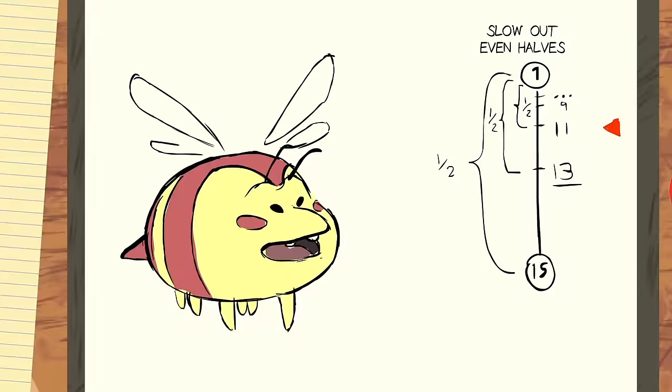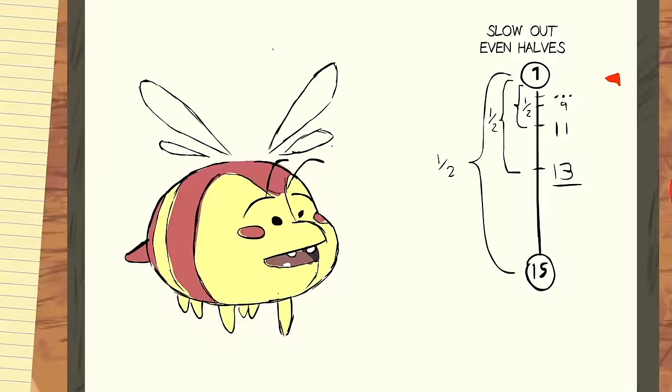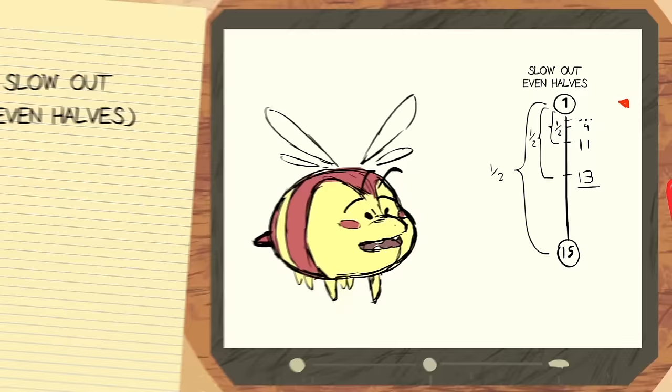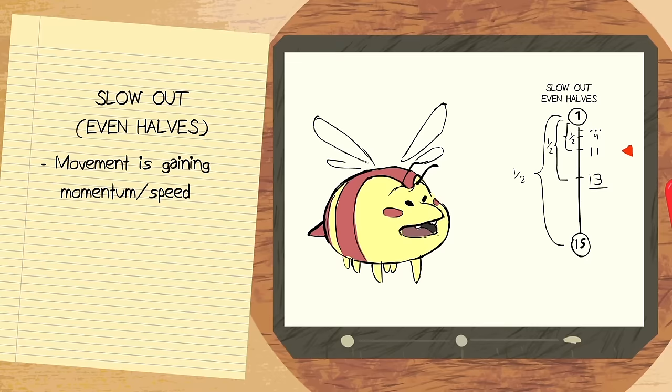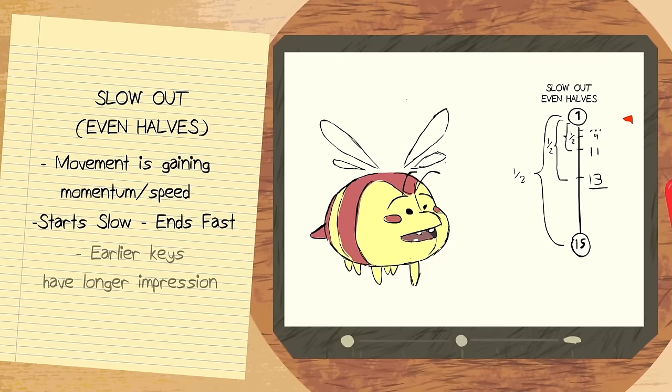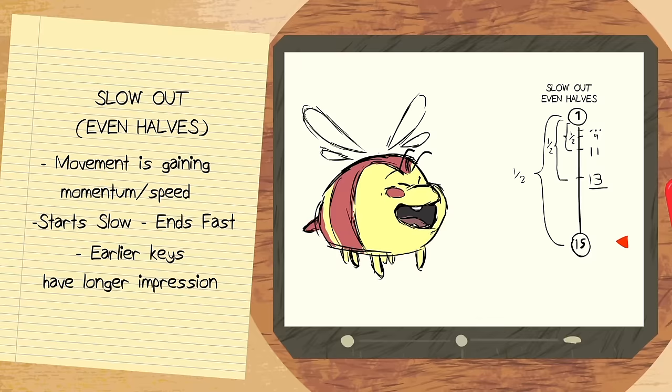Now to our second chart, a slow out, still in even halves. It's now in the opposite. It starts out as slow, and skyrockets as it gets closer to the last key. With no in-between from our breakdown to our last key, we now have more of the in-between drawings in the beginning half. This gives the feeling that the motion is gaining speed. It's starting to accelerate. I usually use charts like this when the character is taking in air, or when the character is starting to fall after a jump. In this example, it's as if the bee is realizing something, and he's quite happy about it.